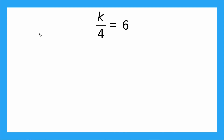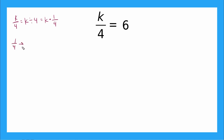Our last example says K over four is equal to six. What does this fraction mean? Fractions are another way of saying division, so K over four is the same as K divided by four. We can also think of this as K times the fraction one-fourth. We're going to solve it as written — K over four equals six — so we need to undo divided by four. We can multiply by the inverse fraction: the inverse of one-fourth is four over one.